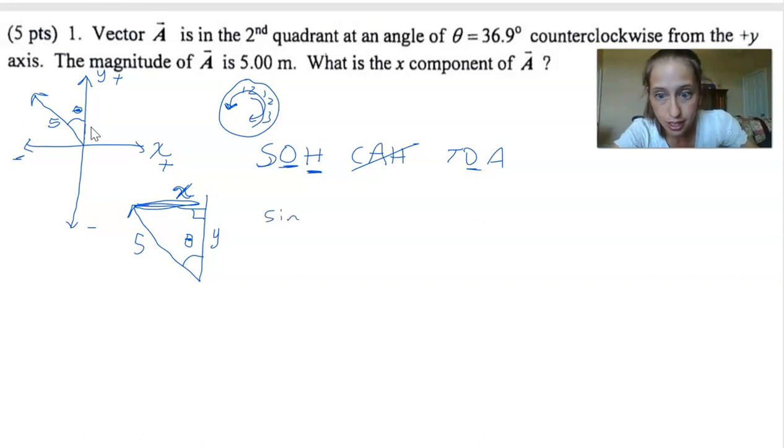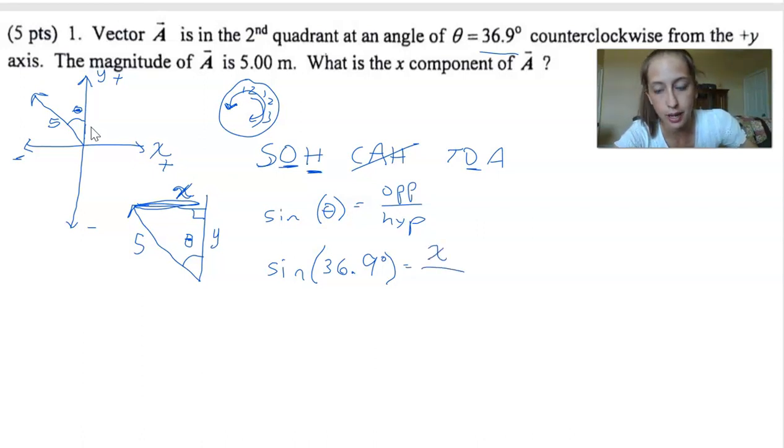So sine of theta is opposite over hypotenuse. Let's plug this into sine. We know what theta is. Theta is 36.9 degrees. It's the sine of 36.9 degrees equals opposite. We don't know that number. That's our unknown. That's our x over hypotenuse. The hypotenuse is 5. We have one equation with one unknown. We can solve this.